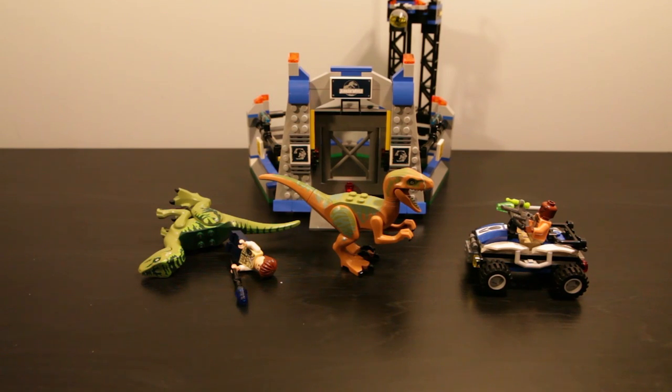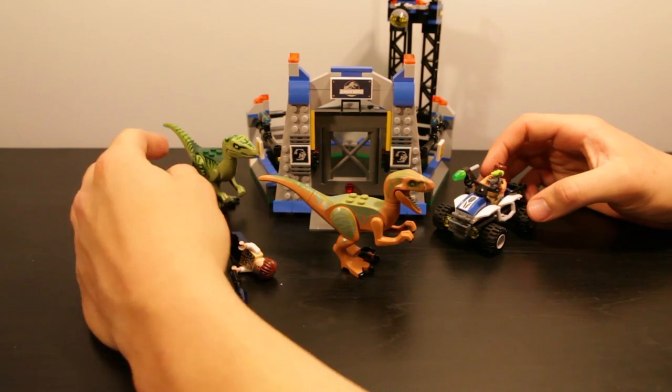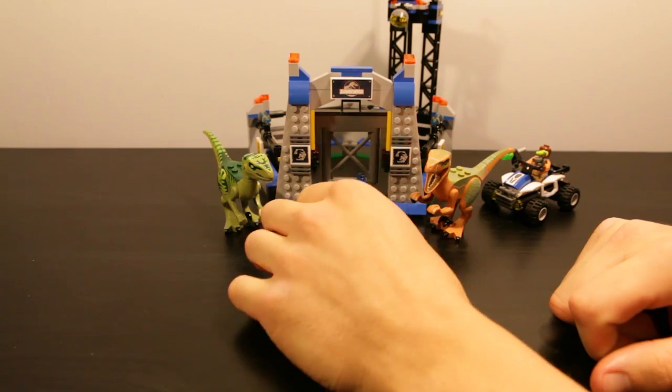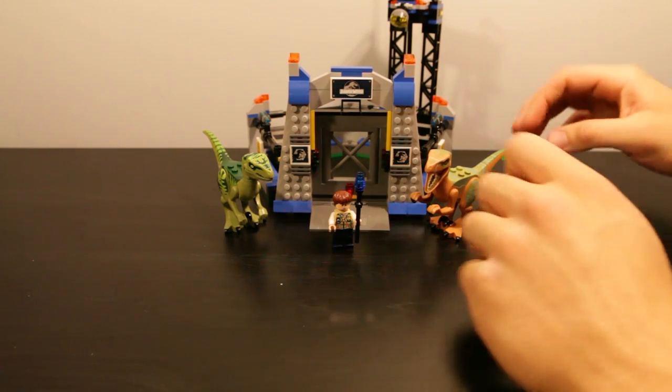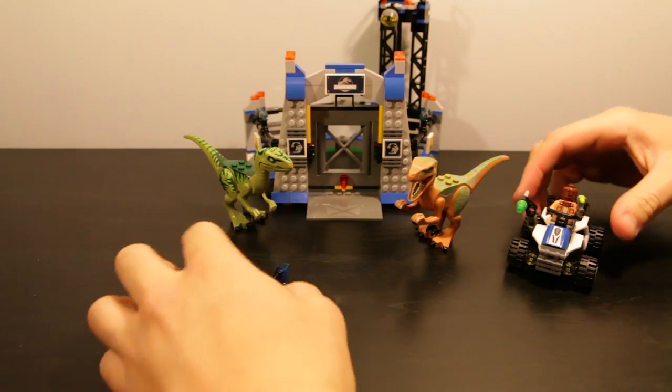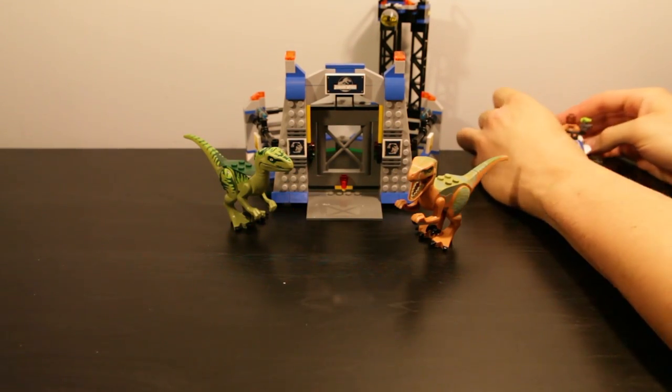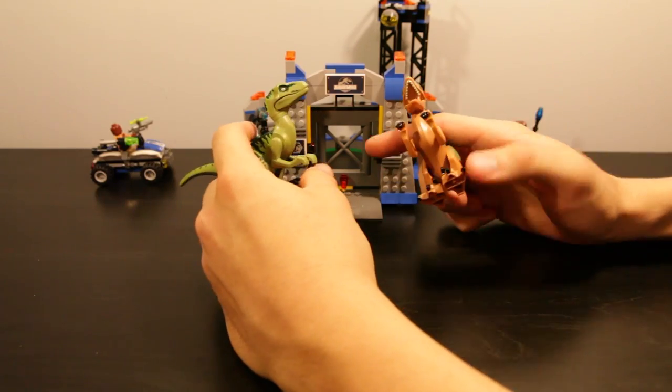This Lego stuff continues to blow my mind. Absolutely blow my mind. You have a raptor pen. You get your two raptors, Charlie and Echo. You get a minifigure of a veterinarian and Barry, played by Omar Sy. I guess I'll start with likeness.